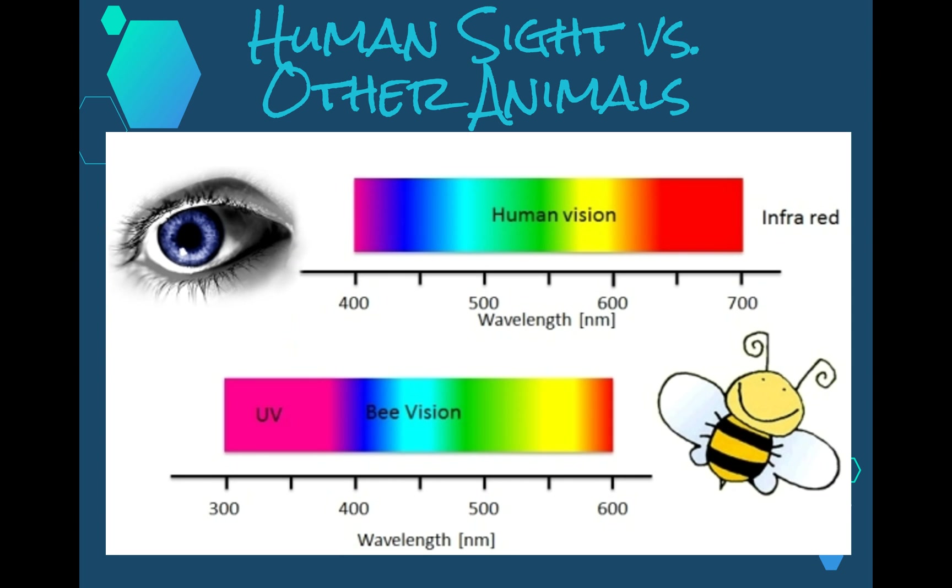UV patterns on flowers that attract bees may have a bullseye pattern directing the bees to the pollen and nectar in the center of the flower. Honeybees however are unable to detect some of the longer wavelengths in the red part of the spectrum. It is thought that they see red objects as black or the absence of color.